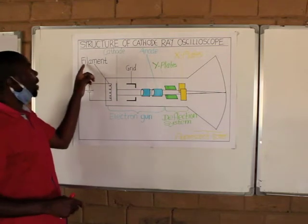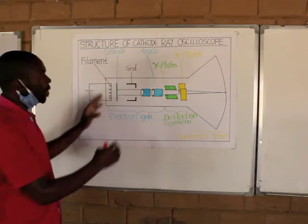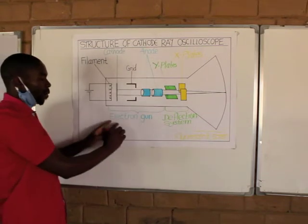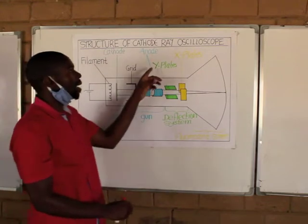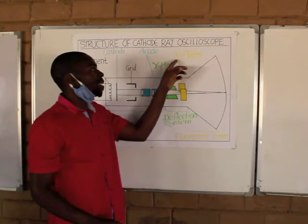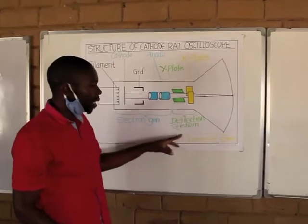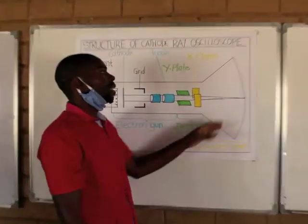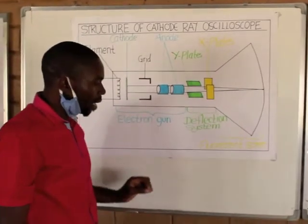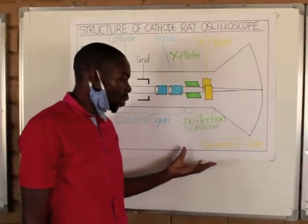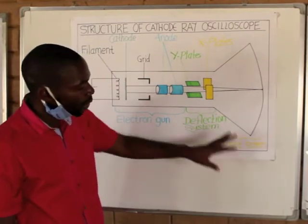Here we have the filament, the cathode, grid, and the anode. These four structures make what we call the electron gun. While the X-plates and the Y-plates, these two make what we call the deflection system. And then the screen is made up of a substance which is called the fluorescent material — no wonder it is called the fluorescent screen.